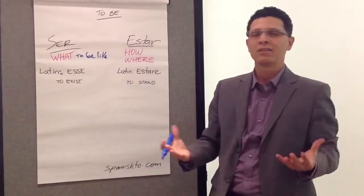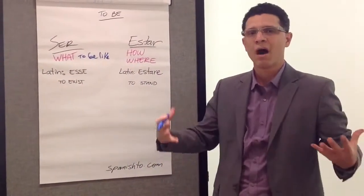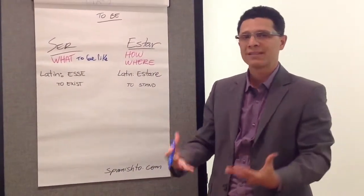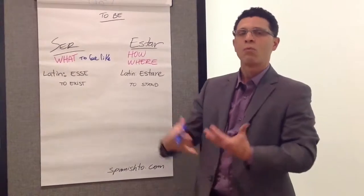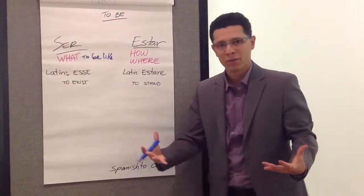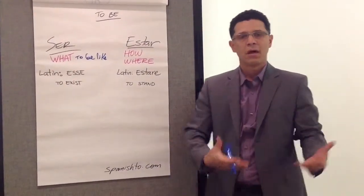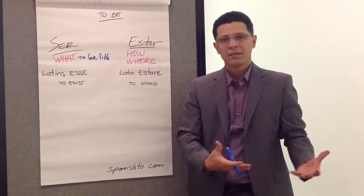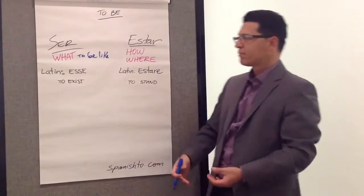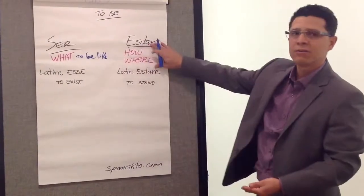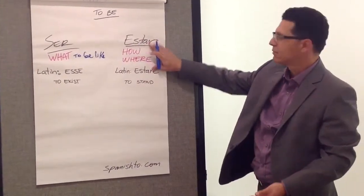That's the definition of ser: what to be like. It comes from the verb esse, which means to exist. So it responds to the question of what are you. If you exist, what are you? Are you a person? Are you a tree? Are you a rock?